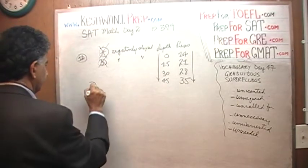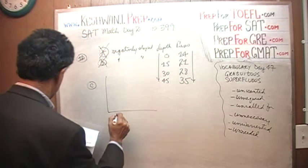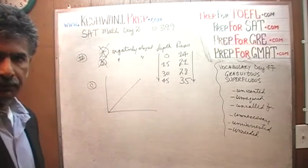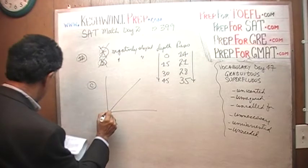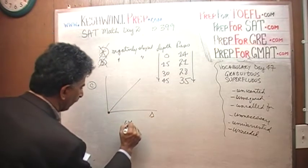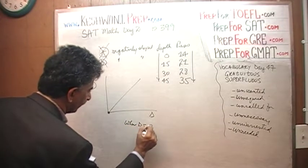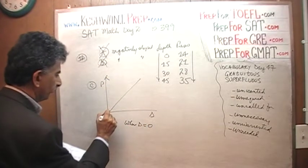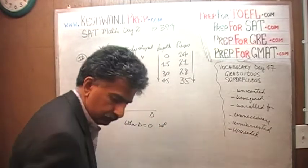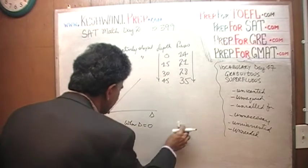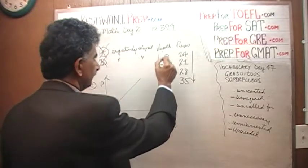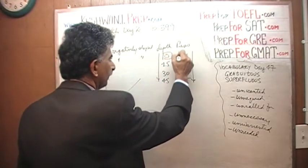What's wrong with C? Is C okay? C is positively sloped, but what does the graph show here? The graph shows here that when depth is zero, the pressure is also zero because it starts with origin. It says when depth is zero, pressure is zero. Is that what we see here? No, we do not see there. When depth is zero, pressure equals 14.